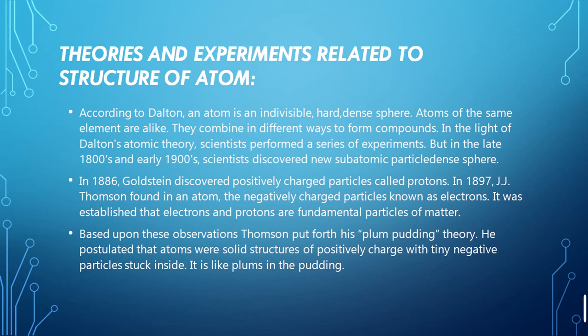These experiments led Thomson to put forward the plum pudding theory. The plum pudding is basically like a mixture — we mix at our homes milk, rice, and different dry fruits to make a pudding dish, which is a sweet dish. Thomson proposed that the structure of the atom is like this: it is a positively charged particle surrounded by tiny negative charges stuck in it, like a pudding.